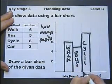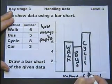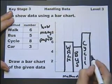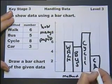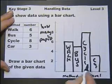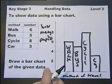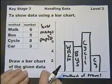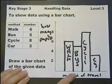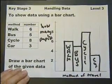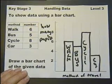You can write the label either below the bar or at the side. Three go by car. So as long as you label your axes — how many pupils, method of travel — there's your bar chart.